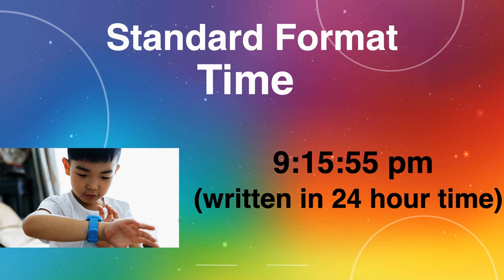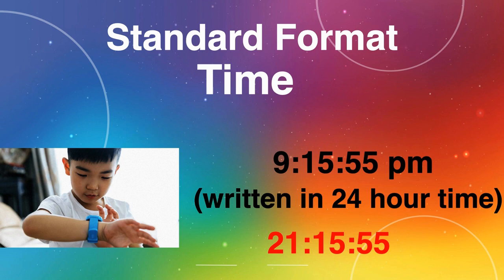Once we pass 12, we then begin counting until we get to the hour of 9. So that would be 13, 14, 15, 16, 17, 18, 19, 20 — 21 is now our new hour. 15 minutes remains the same, and 55 seconds remains the same. There's no need for us to put the PM, because automatically we know 21 represents the PM on the 24-hour clock.